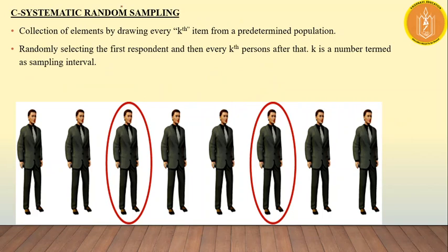The third type is systematic random sampling, in which you select every nth — or kth — unit. For example, you leave 2 and select the 3rd, then leave 2 and select the 3rd, and so on. In a systematic way, you select every nth person from the population.